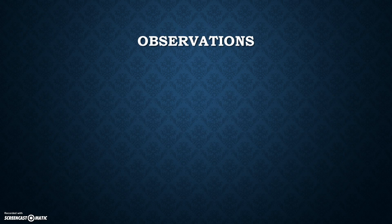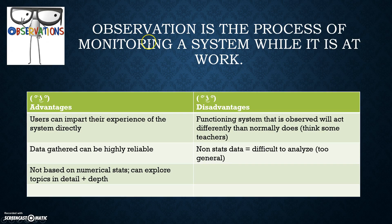The first method for obtaining requirements from stakeholders is observation — it's the process of monitoring a system while it is at work. Advantages include that users can impart their experience from the system directly, data gathered can be highly reliable, and they're not based on numerical stats, so they can explore topics in detail and depth.